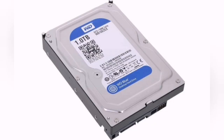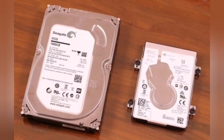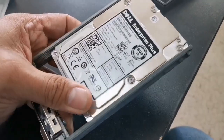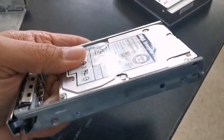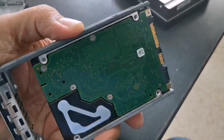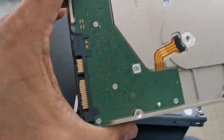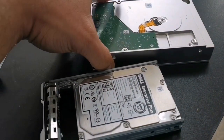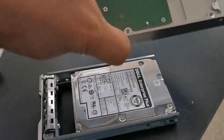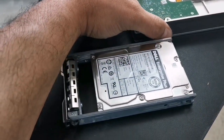HDDs come with different types of connections like SATA and SAS, and also in different sizes: 3.5-inch and 2.5-inch. The 2.5-inch is the small hard disk, similar to a laptop hard disk, while the 3.5-inch is the larger one, similar to a desktop hard disk. The size you choose depends on the model of the server or storage where you will install it.